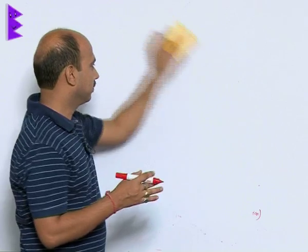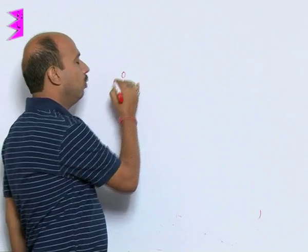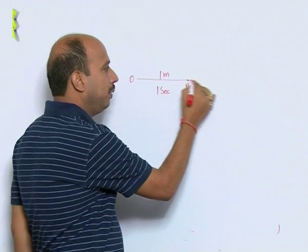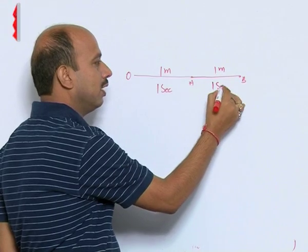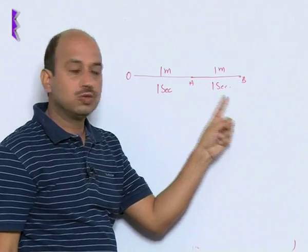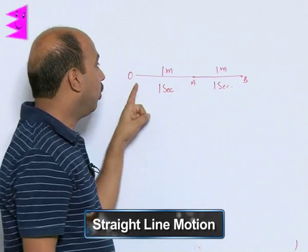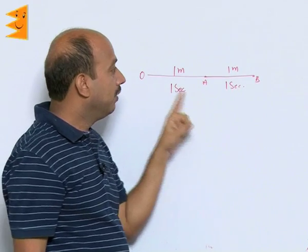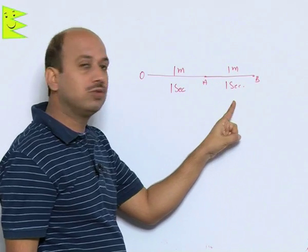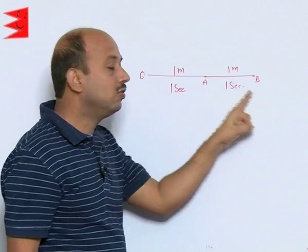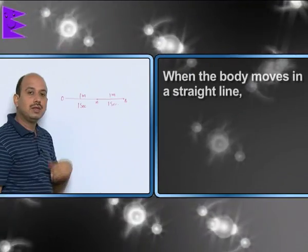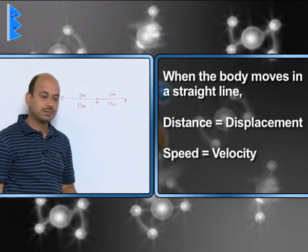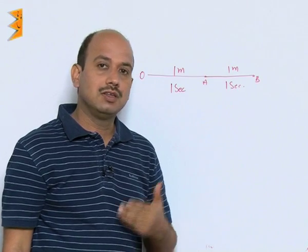If a body moves in a straight line — suppose the body is moving from O to A in 1 second, and the distance is 1 meter, then A to B is again 1 meter in 1 second. When the body goes from O to B, distance is 2 meters and displacement is also 2 meters. Speed is total distance 2 meters upon 2 seconds, which is 1 meter per second. Velocity is also 1 meter per second. So when the body moves in a straight line, distance and displacement are equal, and speed and velocity are equal. For straight-line motion, we can refer to speed and velocity using the same terms.